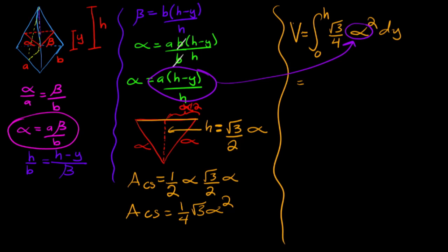Putting the constants on the outside, we have square root of 3 over 4 times A squared over H squared, then the integral from 0 to H of H minus Y squared dY.